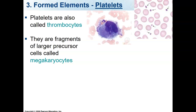Megakaryocytes are big giant cells found in the bone marrow. This particular one is found in the blood, which is not a good sign — it's usually a sign of leukemia if you see a megakaryocyte in the bloodstream. From this big megakaryocyte, you can see the platelets coming off of it. About 2,000 platelets are formed from each megakaryocyte.